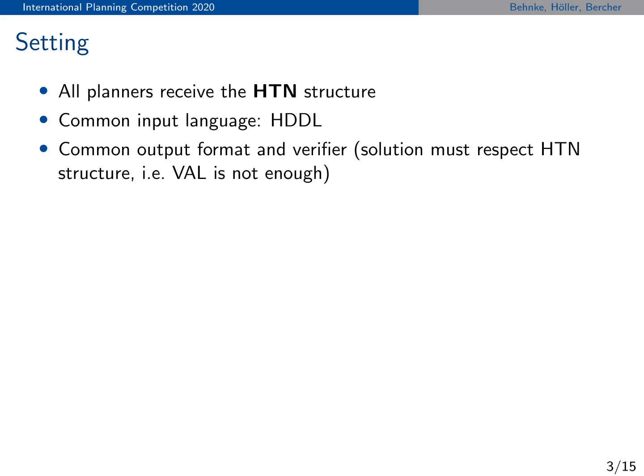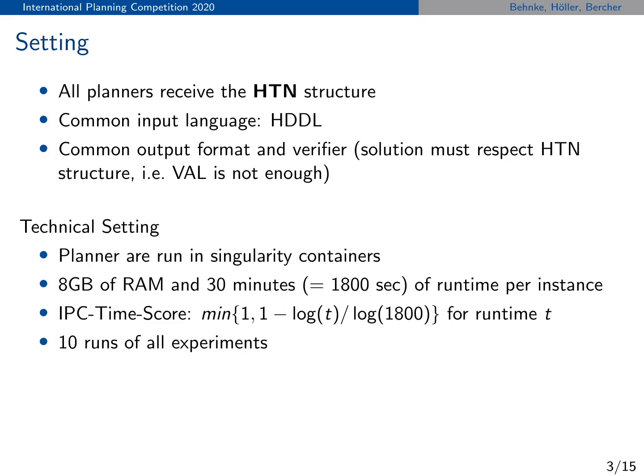For HDDL we also defined an output format for plans and provide a verifier so that we and you can check whether the plans found by the competitors are actually valid. From a technical point of view, we ran all the planners inside of Singularity containers. For every instance, each planner had 8 gigabytes of RAM available and 30 minutes of runtime. We asked the planners to provide a solution as quickly as possible, so we completely ignored solution quality and action costs. The planners were scored according to the IPC time score, which is 1 minus the logarithm of the actual runtime divided by the logarithm of 1800. To eliminate randomness, we executed the whole IPC 10 times and averaged over the results.